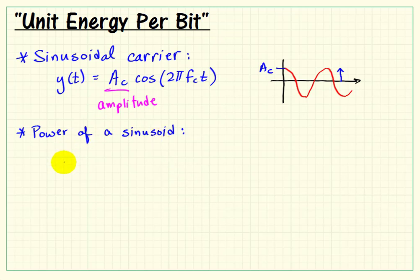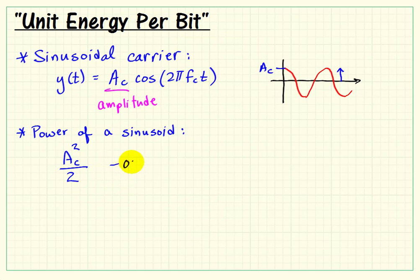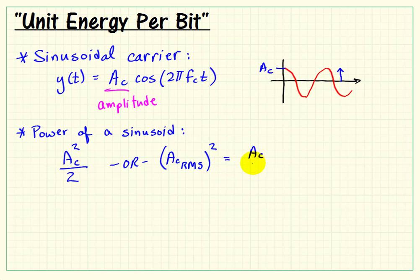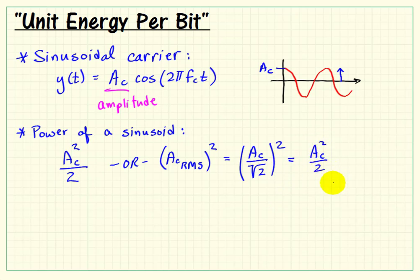Recall from circuits courses that the power of a sinusoid, knowing the amplitude, can be found as the amplitude squared divided by 2. Alternatively, from AC sinusoidal steady state, if we know the RMS value of the sinusoid, we can square that to get the power. The RMS value is the amplitude divided by the square root of 2, and squaring that gives amplitude squared divided by 2 — the same result.